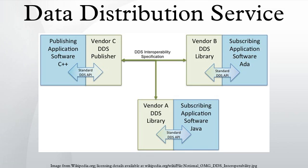Topic Description is an abstract base class for Topic, Content-Filtered Topic, and Multi-Topic. Topic is a specialized topic description — the most basic description of the data to be published and subscribed. Content-Filtered Topic allows content-filtered subscriptions. Multi-Topic allows subscriptions to combine or rearrange data from several topics.